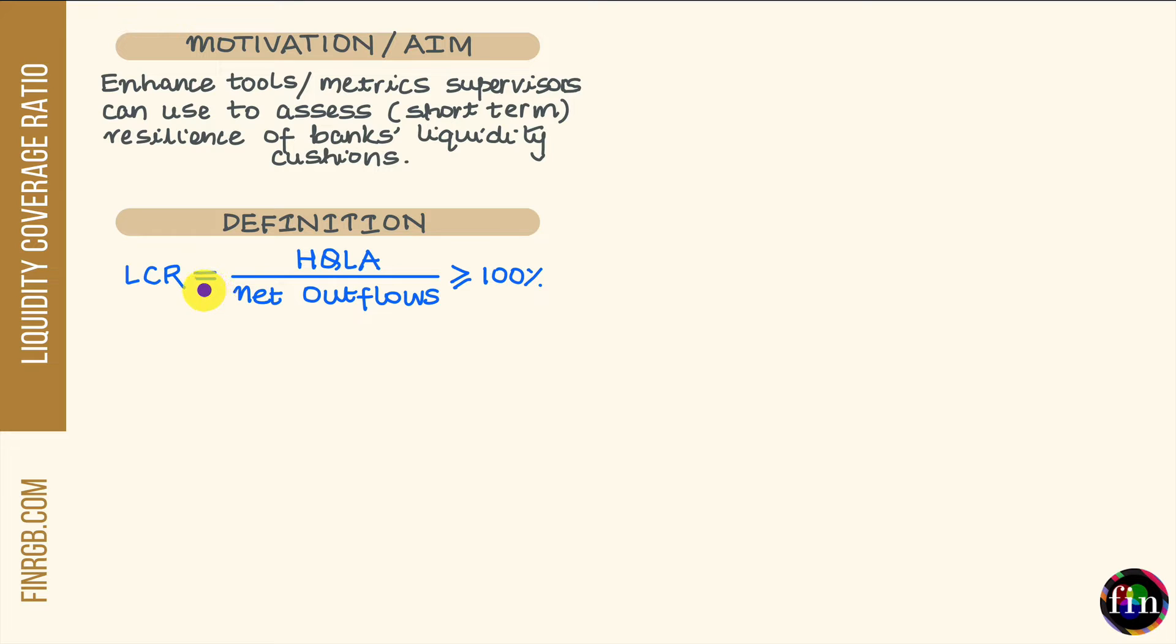For a bank to be compliant with respect to LCR, it has to ensure that at all times the value of its LCR is greater than or equal to 100%. What this means is that if suddenly a stressful scenario were to emerge, this bank would have an asset buffer or liquidity cushion big enough to still entertain its net expected cash outflows for this upcoming month of stress when its other risky funding sources would have dried up or vanished. This is what is meant by assessing the short-term resilience of a bank's liquidity cushions.